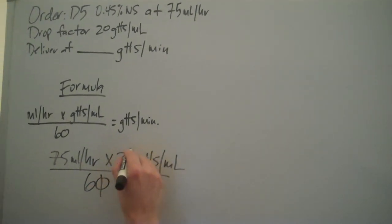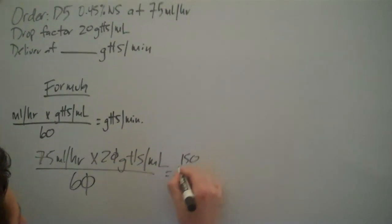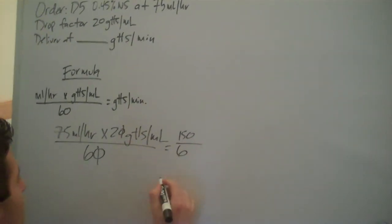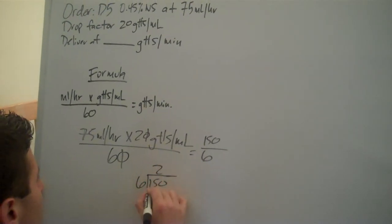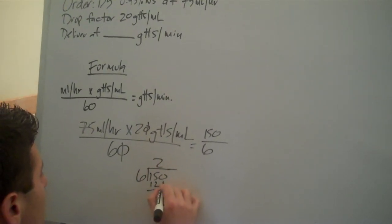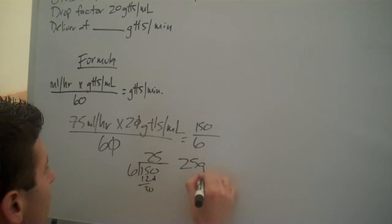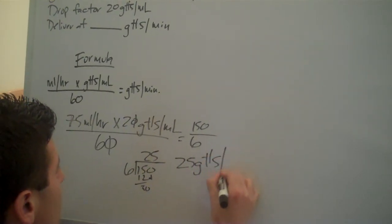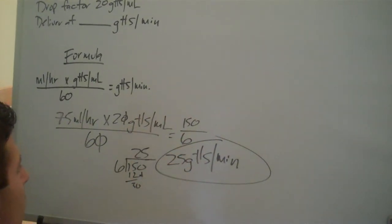We can cross out our zeros. We're going to multiply. We're going to get 150 upstairs. We're going to divide over 6, divide, and we get 25 drops a minute. And there's our problem.